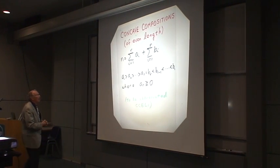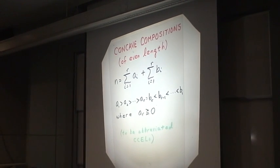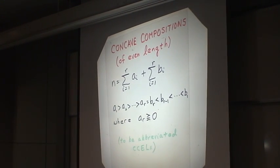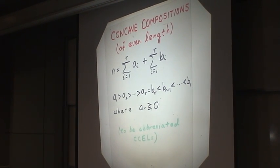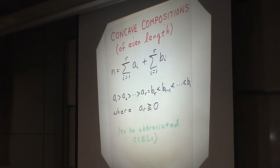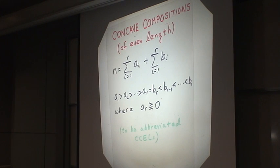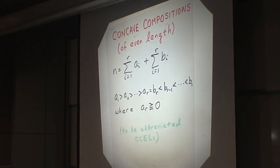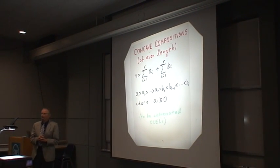So what I'm going to talk about is what I would call concave compositions. In the theory of partitions, one does not take order of the summands into account, so that 3 plus 1 and 1 plus 3 are considered the same partition of 4. But following the definitions created by P.A. MacMahon, a composition is a partition where you do take order into account, so 3 plus 1 and 1 plus 3 are different compositions of 4, but they are the same partition.